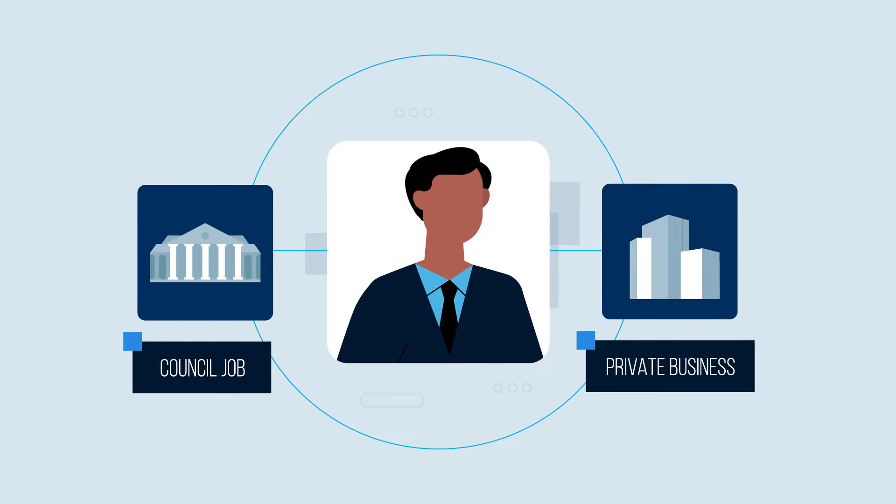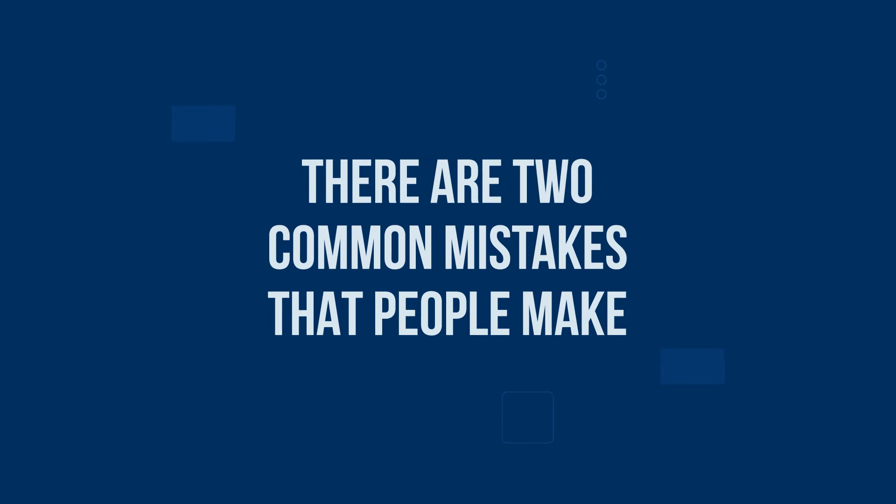Next, think about your public duties — all of the things in your job description and the tasks that your agency requires you to perform, but also to serve the public interest and act ethically at all times. Now, consider whether there is a connection or overlap between your personal interests and your public duties. Finally, you need to consider whether a reasonable person might perceive that the personal interest could be favoured.